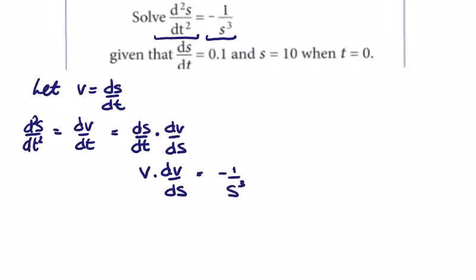So I might bring the s cubed up to the top and make it s to the minus three. So we're going to get v·dv is equal to minus s to the power of minus three ds. So we have a v and an s which we can integrate.